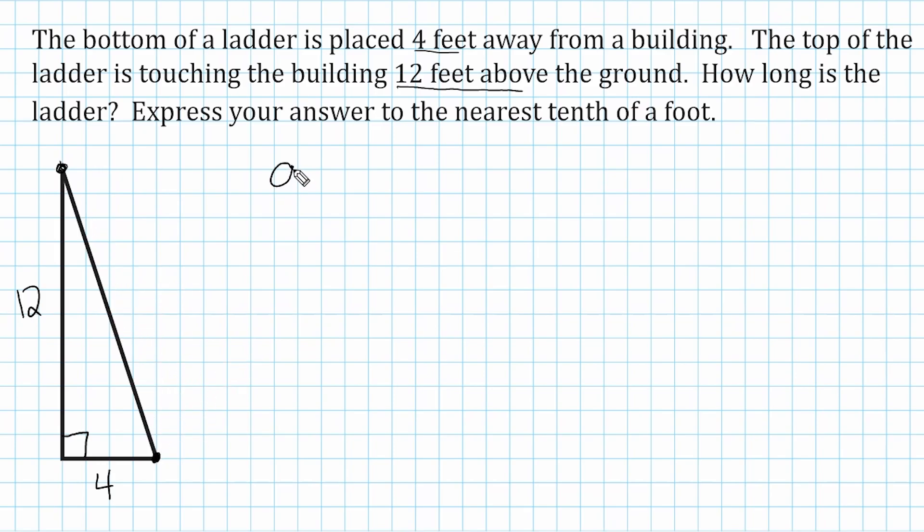So what we're going to do is square our two legs, which is represented by A and B, and we're going to solve for the hypotenuse, which is represented by C. So we're going to plug 4 and 12 into A and B, which are the two legs.